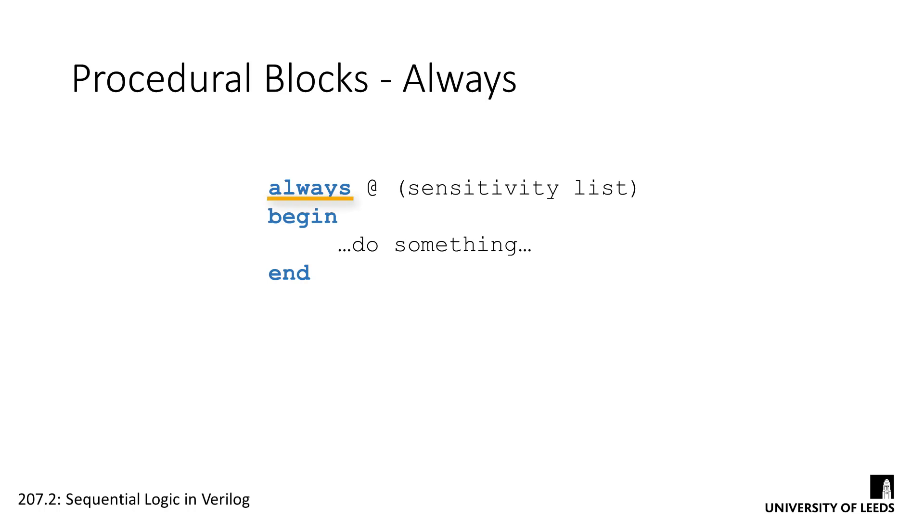We use the always keyword, followed by an at symbol, then specify the block's sensitivity list in parentheses. The sensitivity list outlines the conditions which will cause the code in the block to execute. A single module can contain many different always blocks, each with different conditions in their sensitivity lists.